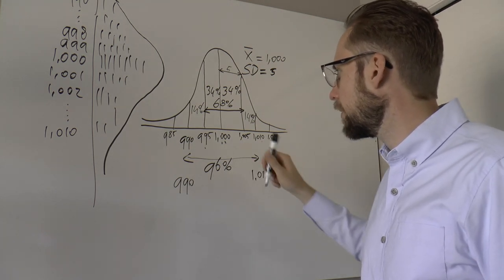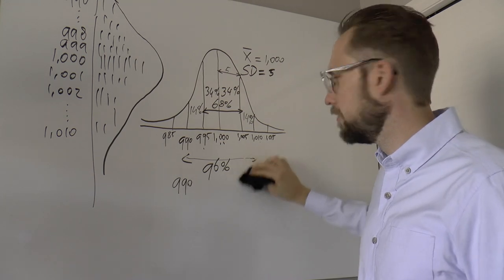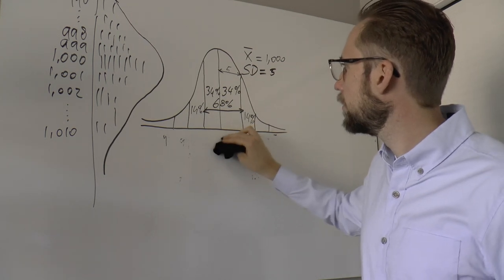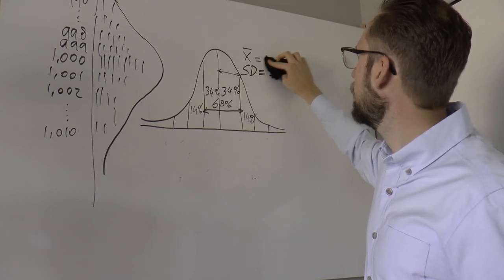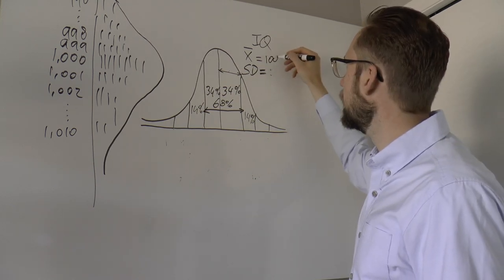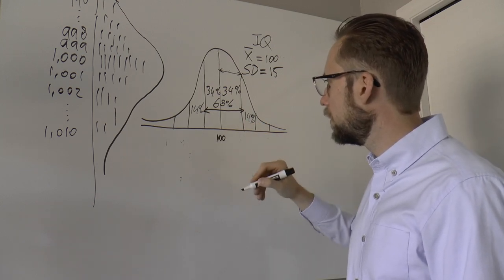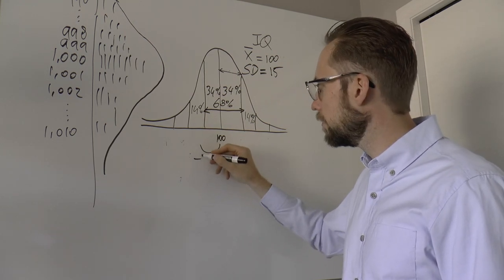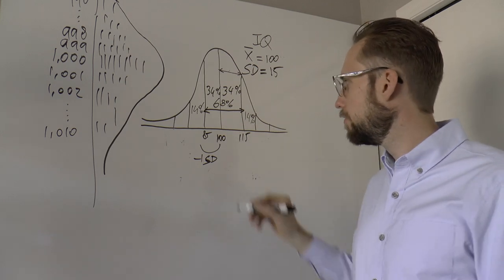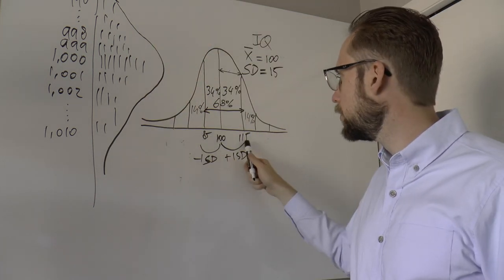You might ask: why do I have to learn this in intro psych? Psychology is not about milk cartons — that's correct. But it turns out that many other values are also normally distributed. IQ, for example, is normally distributed with a mean of 100 and a standard deviation of 15. That means the mean is 100, minus one SD is 85, and plus one SD is 115.